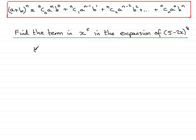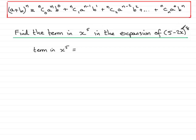Start off by writing down an introduction: the term in x to the 5 equals. Now, when I compare the binomial expansion formula for a positive integer value n — which in this particular example is 8 — what I notice is that the a part is the 5 and the b part is minus 2x. So if I'm looking for a term in x to the power 5, then I must make sure that the b part, minus 2x, is raised to the power 5, because this will give me x to the power 5.